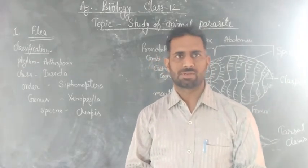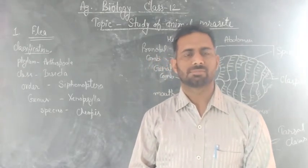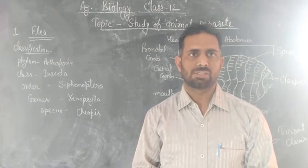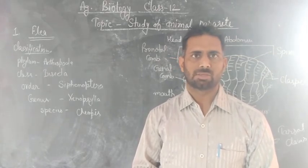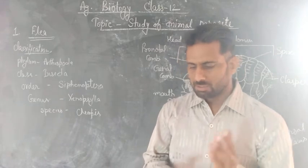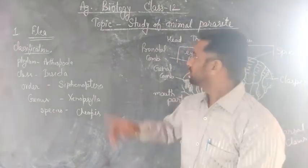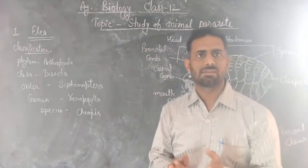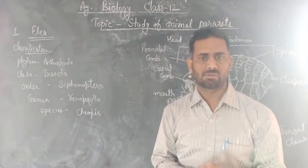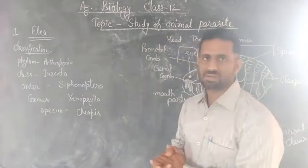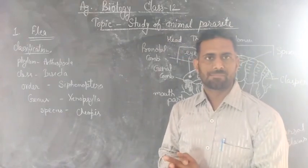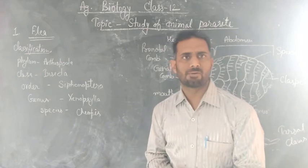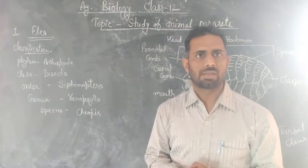Hello students, welcome. Today we are studying Agriculture Biology Class 12th, Chapter 30, which is the study of animal parasites and their economic importance. We have studied four animal parasites in this chapter.